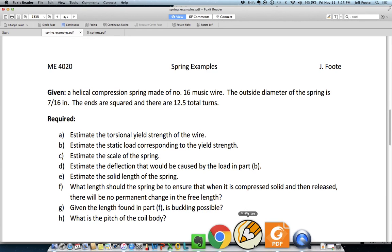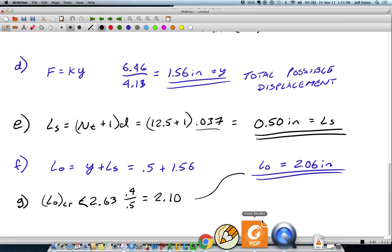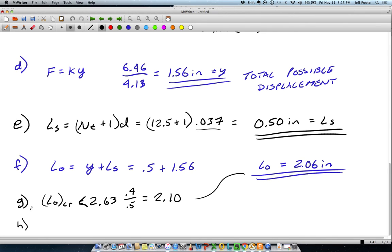What is the pitch of the coil body? Pitch would be the spacing between the coils when it is unwound. To get that, essentially you're taking the free length over the total number of coils to get the pitch. Our free length is 2.06, the total number of coils is 12.5. That's our pitch, and we get a pitch of about 0.165 inches.